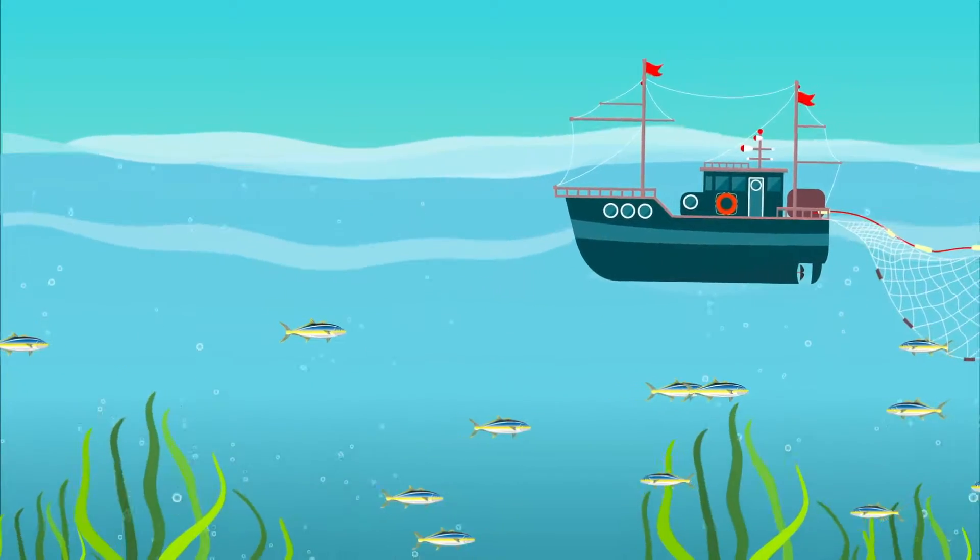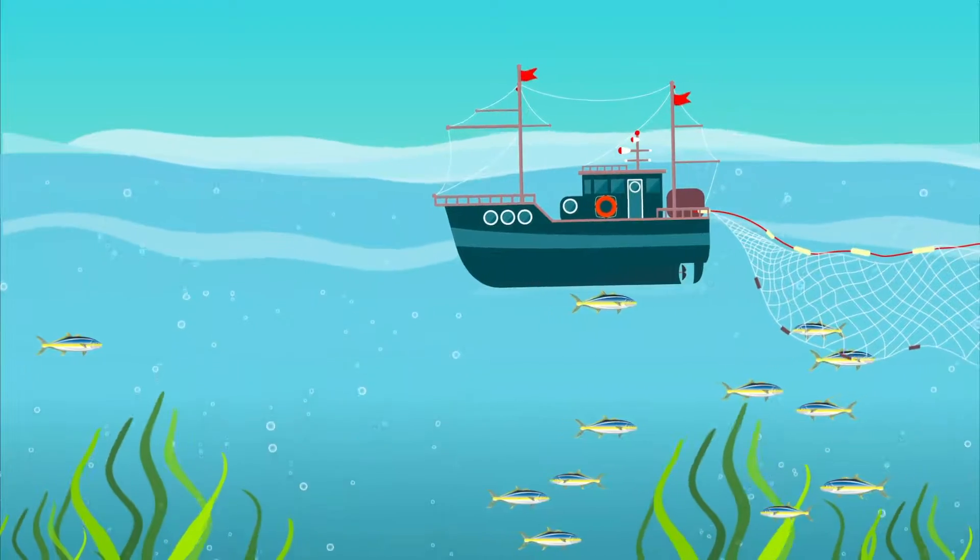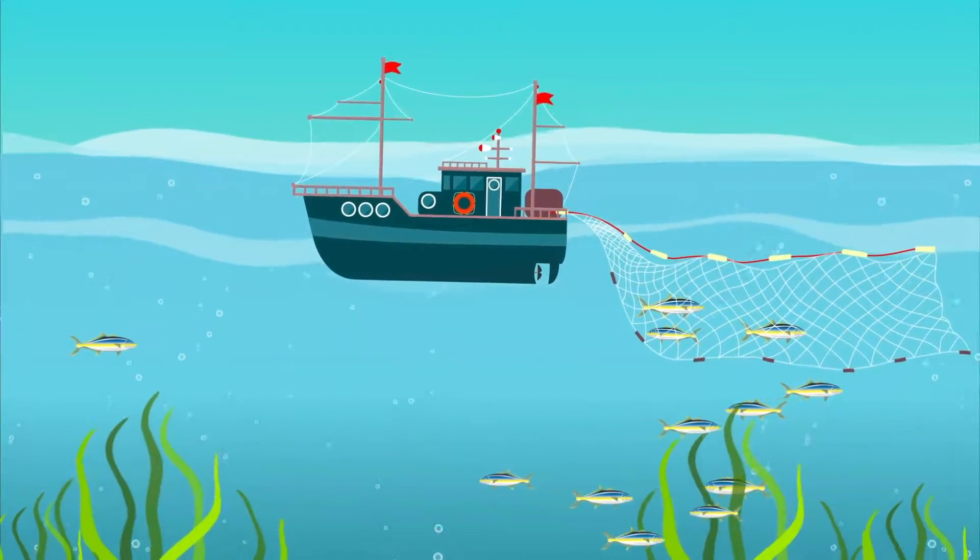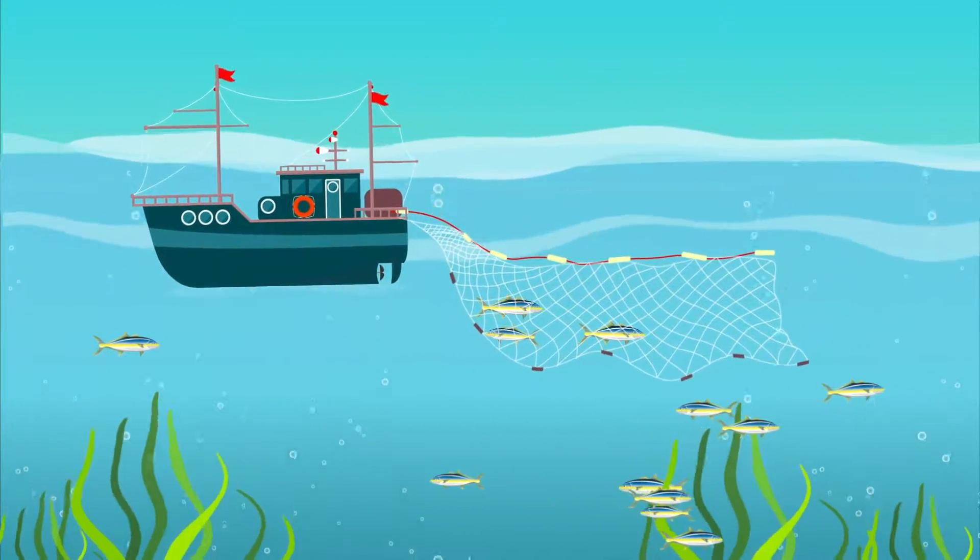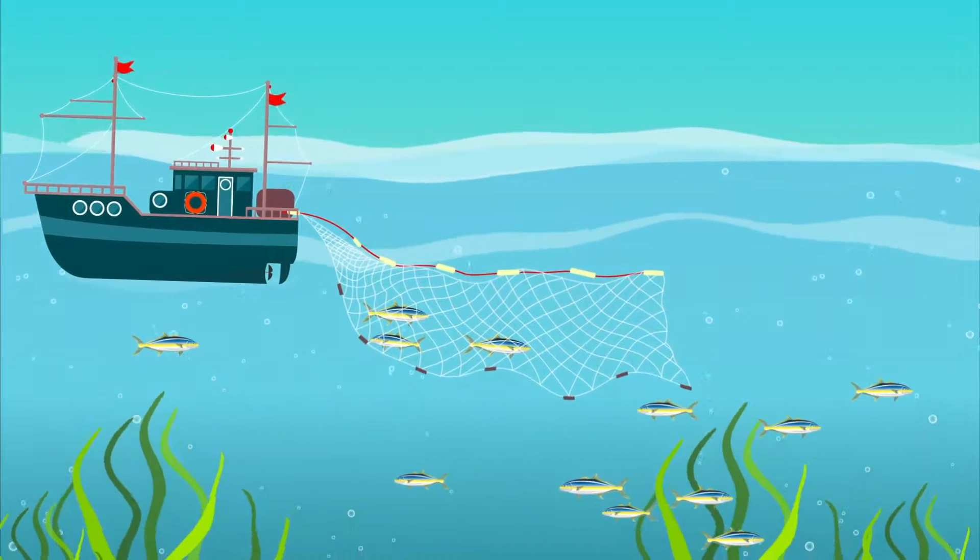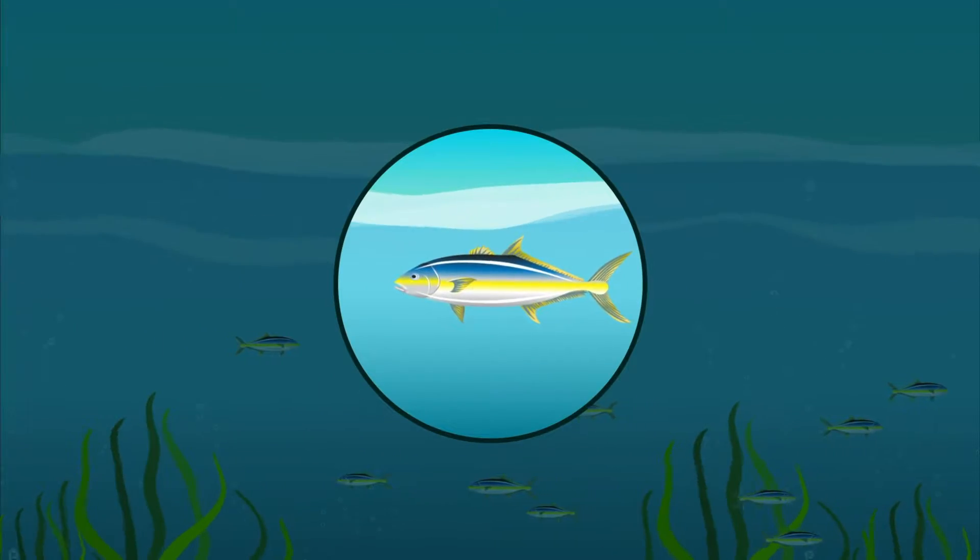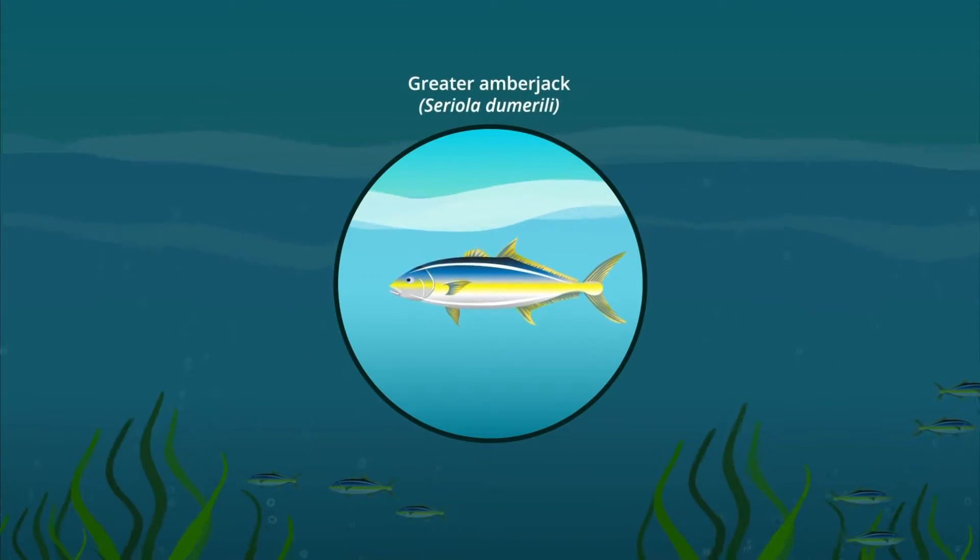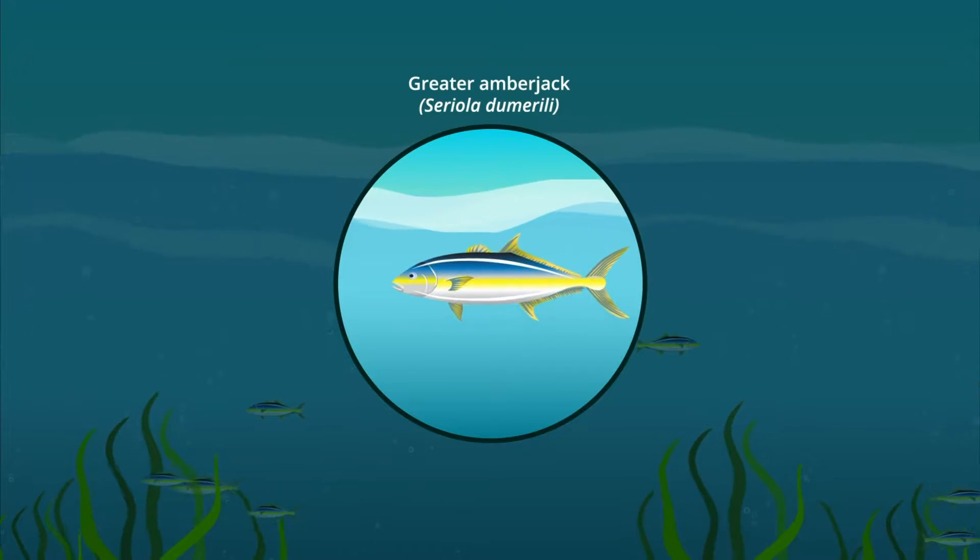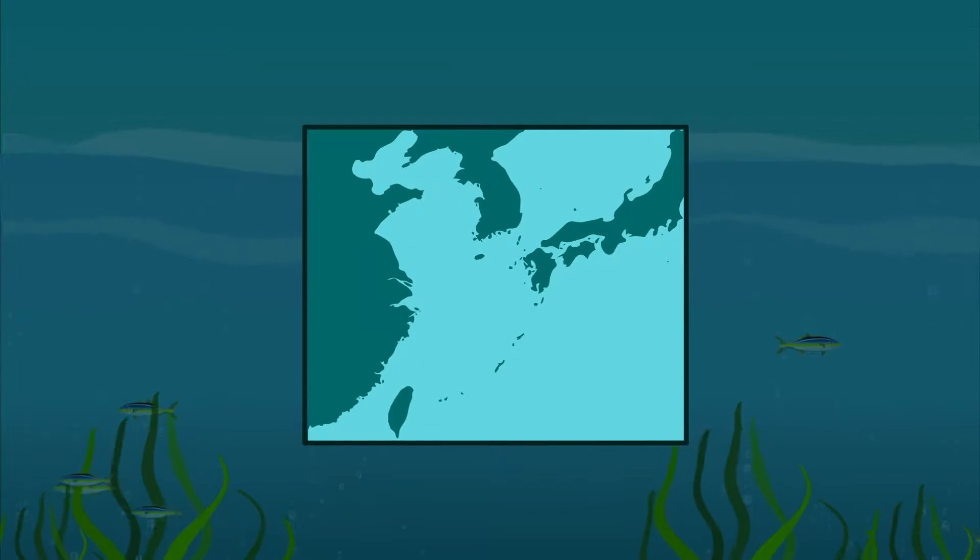Understanding the population structure of economically important fish is essential to planning their optimum stock management and to avoid overfishing. One such economically important fish is the greater amberjack, which is important for commercial fisheries in the East China Sea.